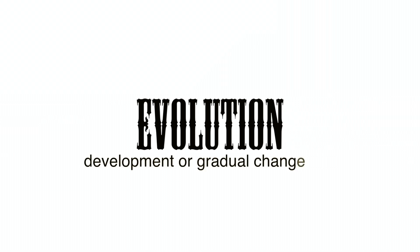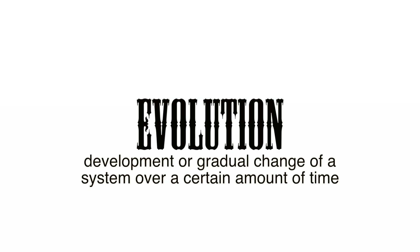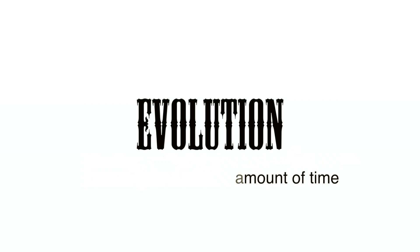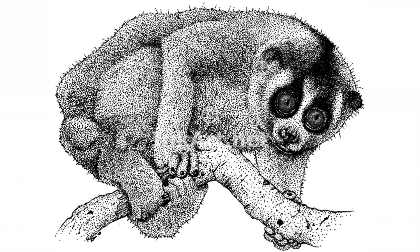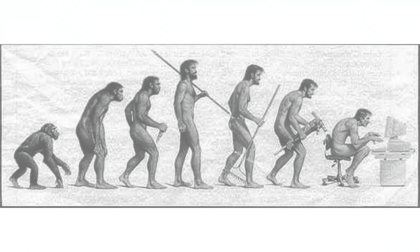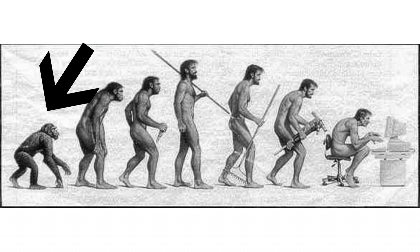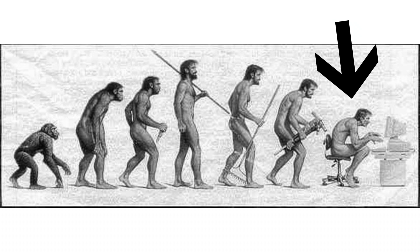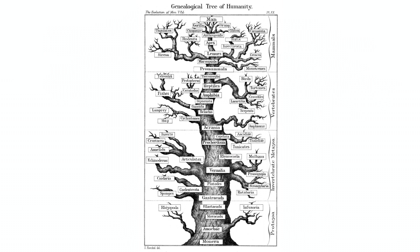Evolution is the development or gradual change of a system over a certain amount of time. This process is slow, taking a few million years to complete. This is where humans came from, starting as four-legged beings and ending as non-leg using beings. Of course, our roots reach back a lot further than that, and in order to talk about the entire evolution of man, we would have to climb up an entire family tree until we arrive in our time.